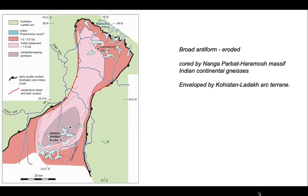The MMT — the main mantle thrust — is the suture between the Kohistan-Ladakh arc terrain and the Indian continent, shown by the black line on the map with the little black bricks. That suture is also folded around the broad antiform. We need to think about two aspects of this story: first, how do rocks of the Indian continent — the Nanga Parbat-Haramosh units — end up beneath the Kohistan-Ladakh arc? And secondly, how does this material come to reach the Earth's surface? Two distinct tectonic processes.